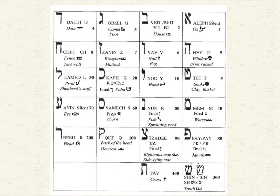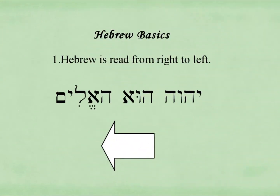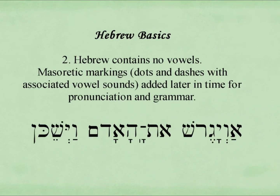Let us begin with a few Hebrew basics. Number one: Hebrew is read from right to left. Number two: Hebrew contains no vowels. Masoretic markings, which are dots and dashes associated with vowel sounds, were added at a later time for pronunciation and for grammar.